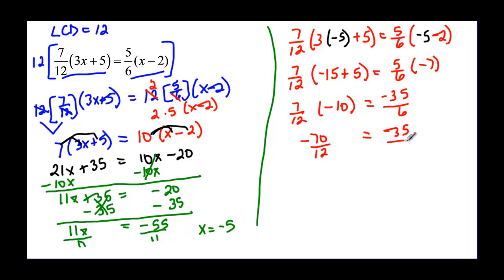Well, it looks like I might be able to reduce this 70 and 12. They are both even, so they are divisible by 2. 70 divided by 2 would be negative 35, and 12 divided by 2 would be 6. And so we see that we really did find that right answer of x equal negative 5.